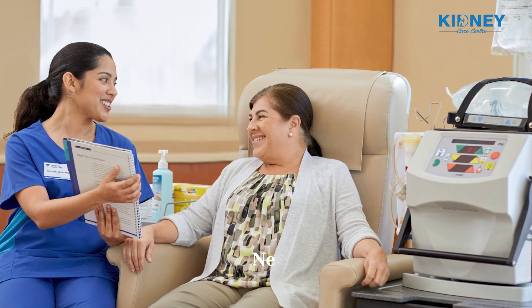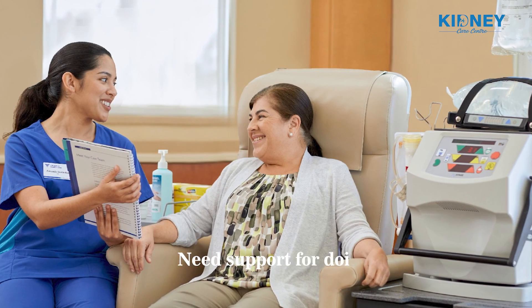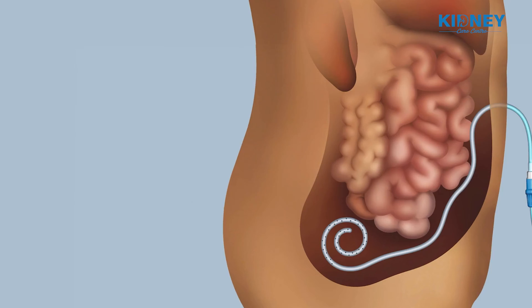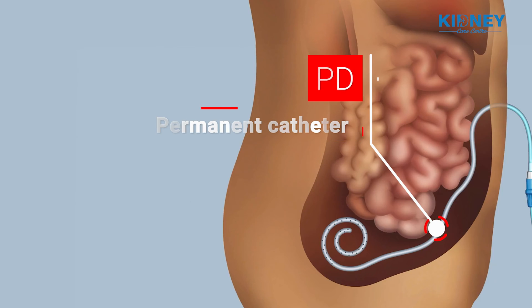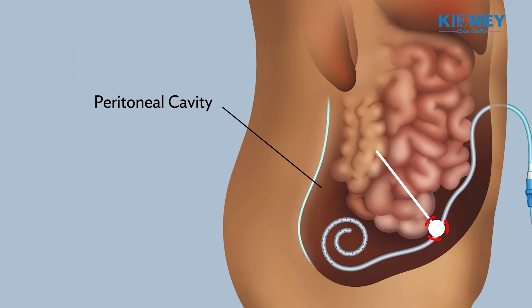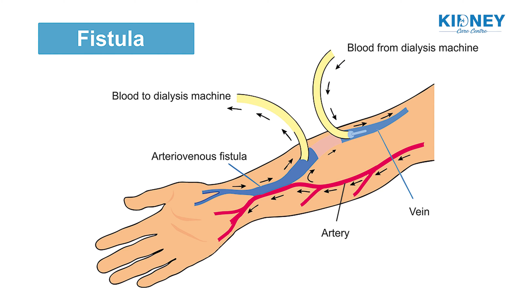Sometimes, if the patient cannot perform the dialysis exchange themselves, they need helpers or partners to assist. For peritoneal dialysis, a peritoneal dialysis catheter is placed, which remains outside the body. In hemodialysis, a fistula is used and there is no external pipe required.